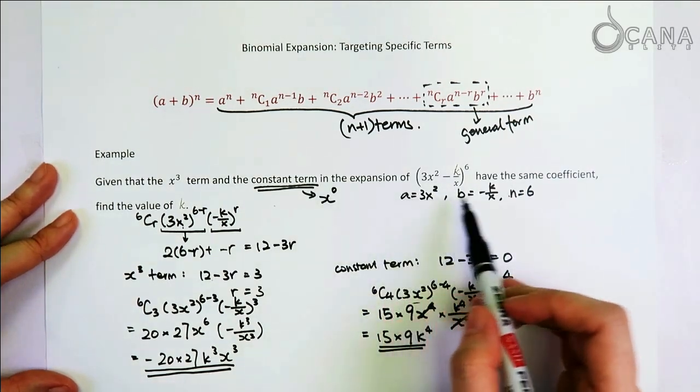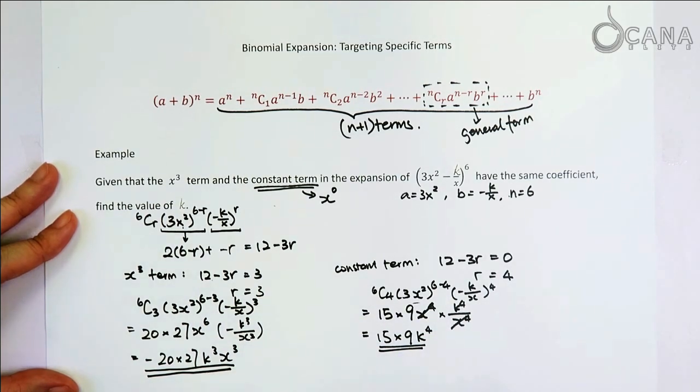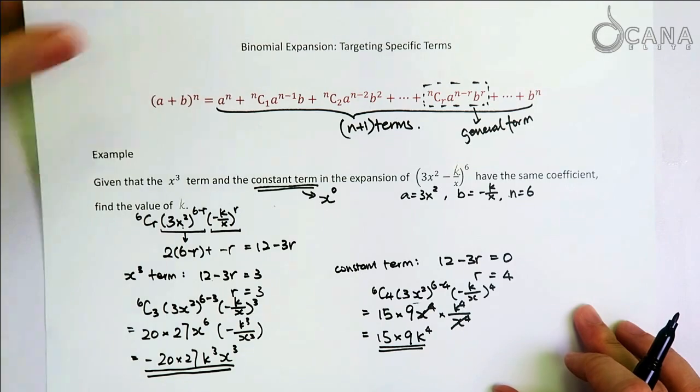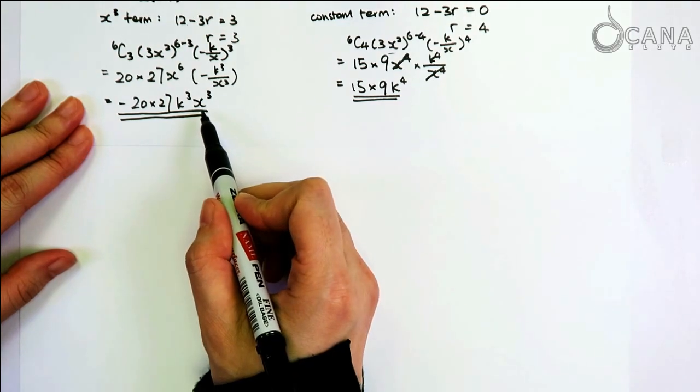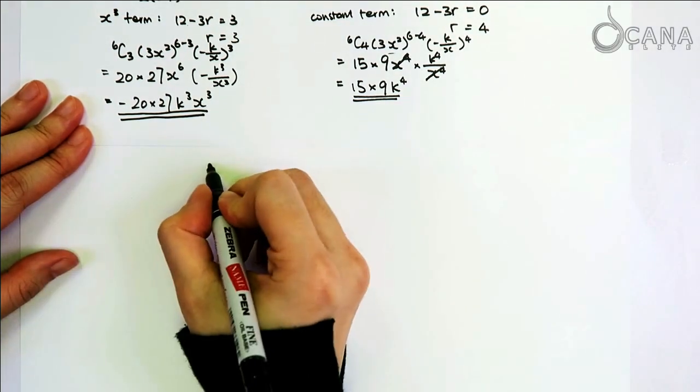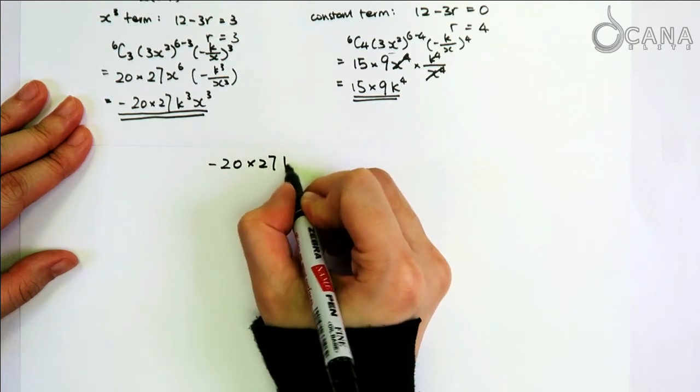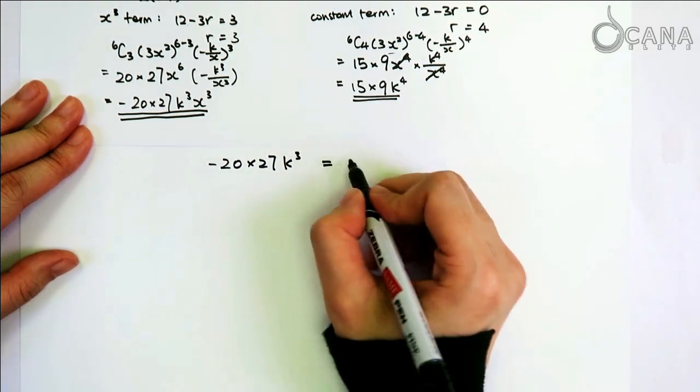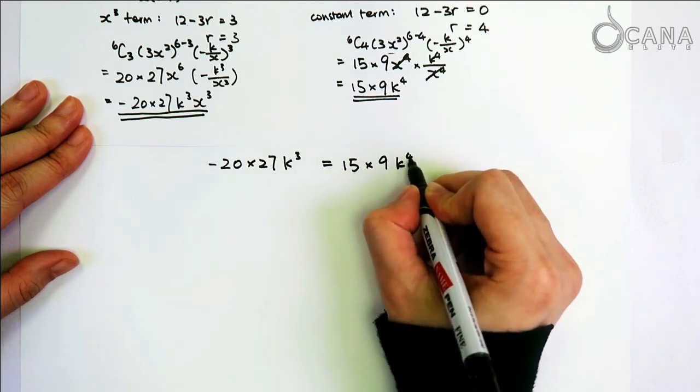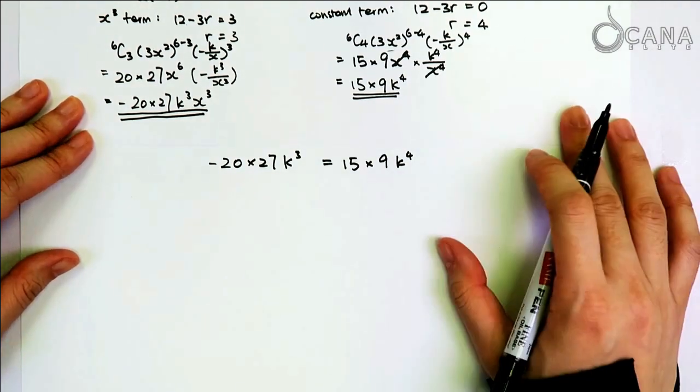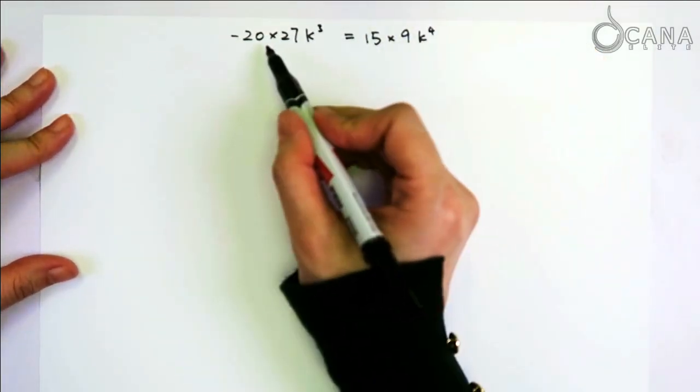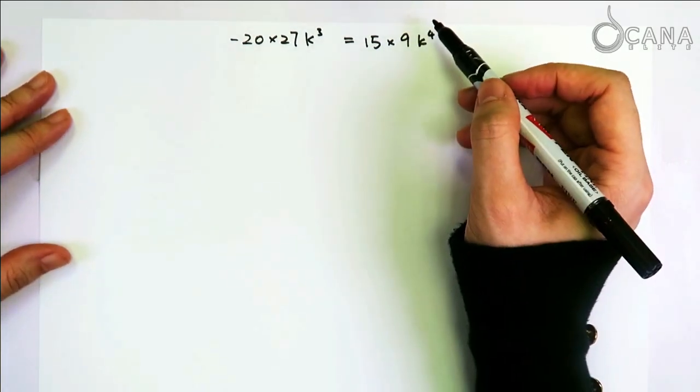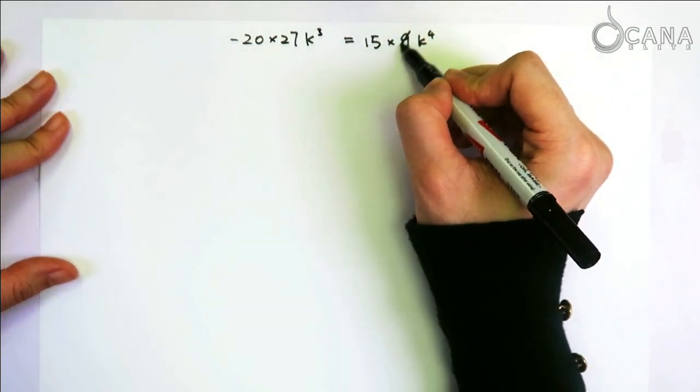And further from this question, it says that the x cubed term and the constant term, they have the same coefficient. So we can just copy this and try to equate the coefficient of the x cubed term and the constant term, which is negative 20 times 27k cubed from the x cubed term and from the constant term, there's 15 times 9k to the power of 4. So the advantage of not multiplying the numbers are revealed here. Because you can see that from these numbers, there are actually a lot of common factors that you have that you can cancel. For example, with the 9 and 27, you leave the 3.